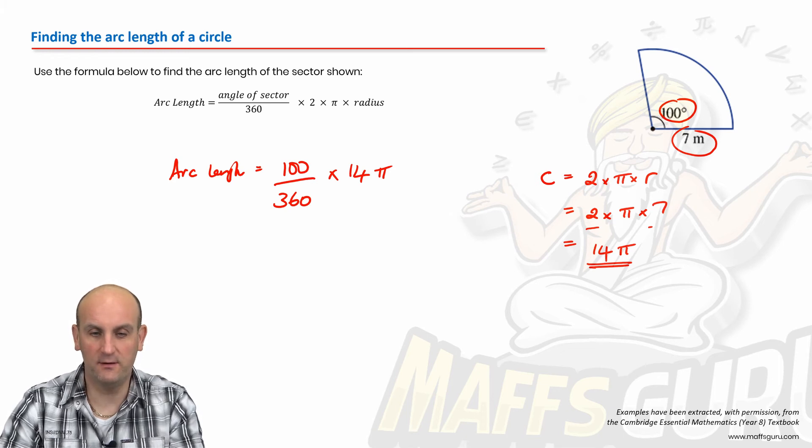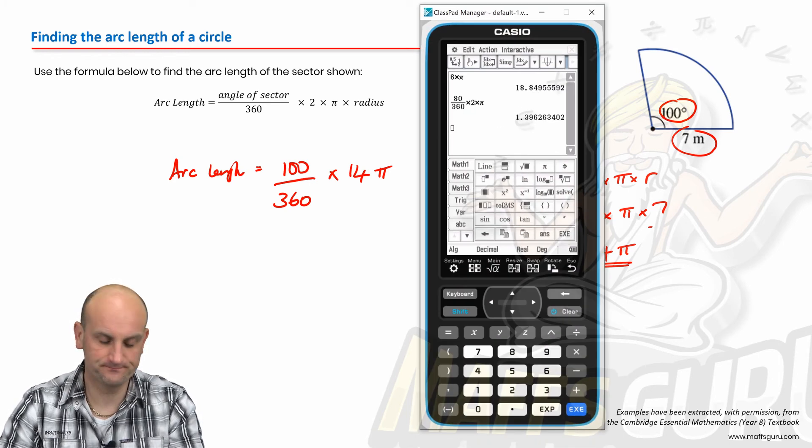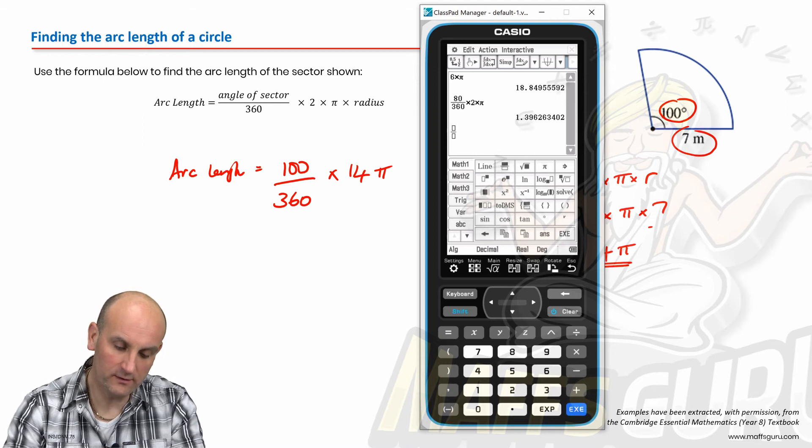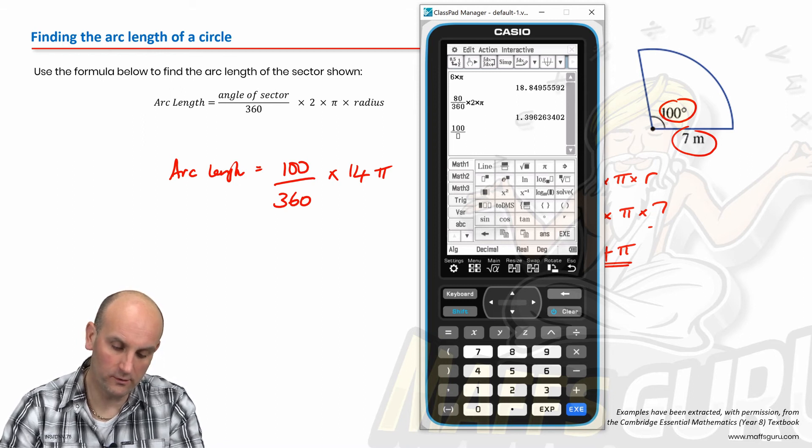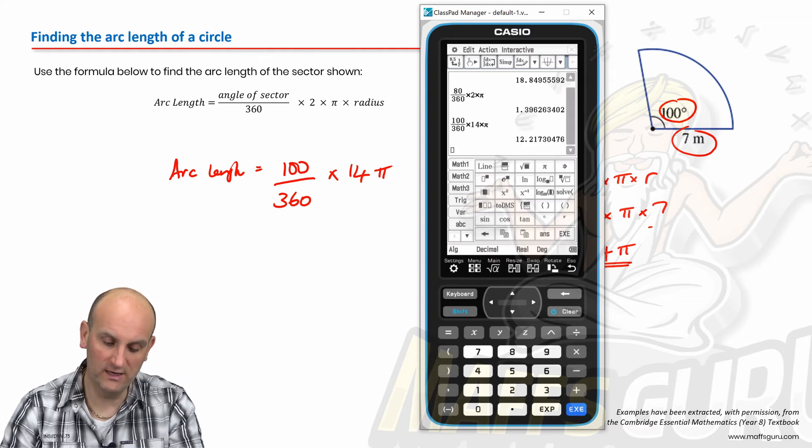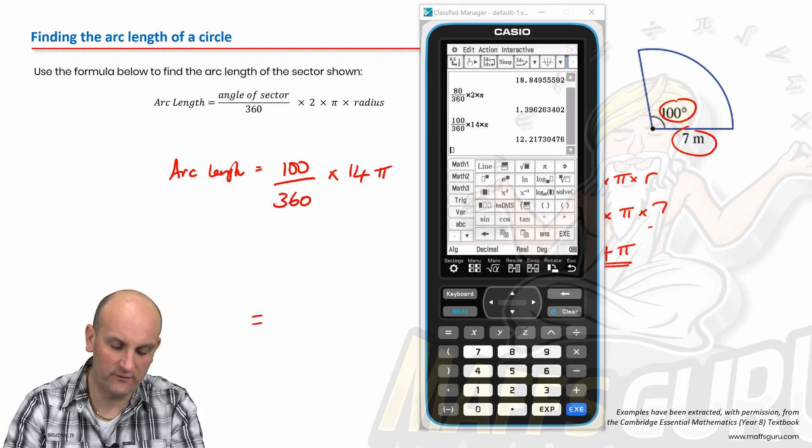And again, I can fire up my calculator and we do put it in a fraction 100 on 360. And we're going to multiply that by 14 times pi, which gives me, well, I'm going to write the decimal value first, 12.22 meters. That's just my arc length.